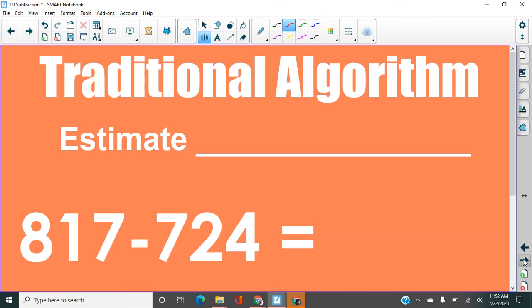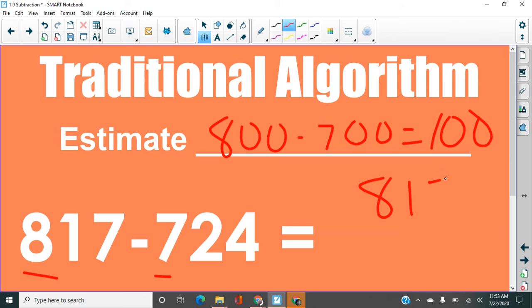Here's a three digit problem for you to try. Take a moment, make your estimate and then find your answer. What should we have had? This is closer to 800. This is closer to 700. So my estimate is 100. And let's take a look at our problem. 817 minus 724.